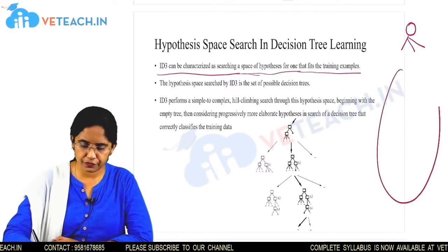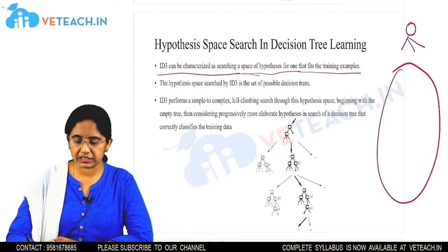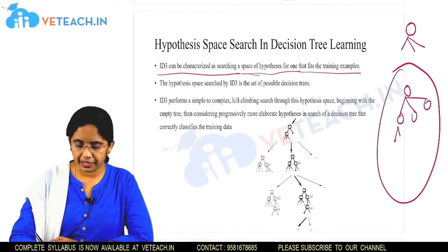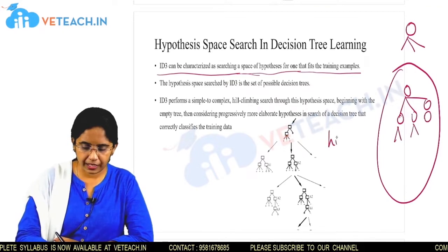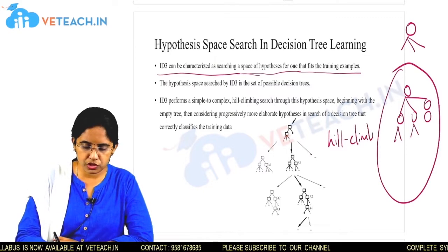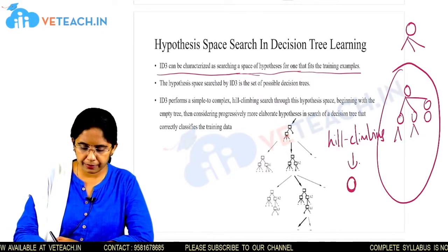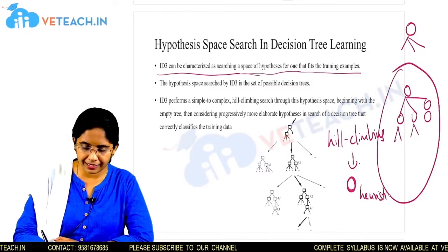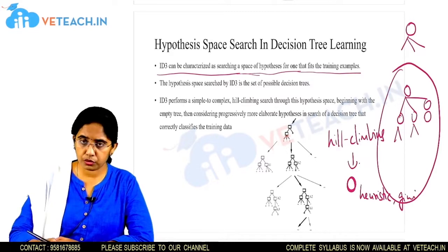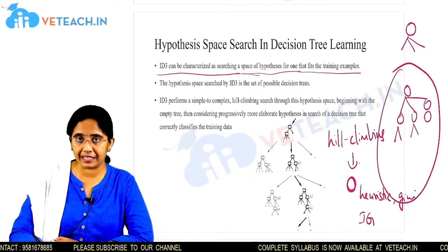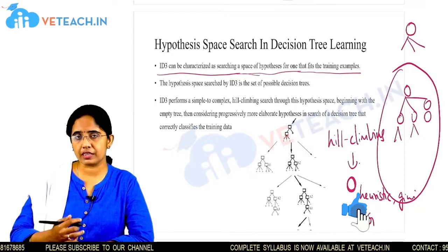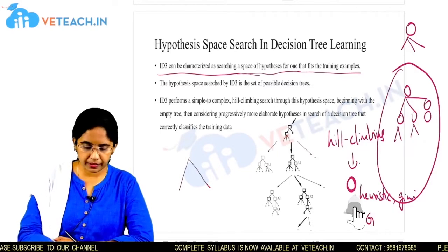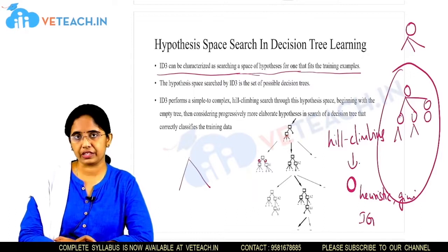Given a hypothesis space, we need to pick the tree which best fits our training data set. For this we use a hill climbing approach. In the hill climbing approach, we start with an empty tree and an empty root. From this empty root we apply heuristics such as calculating information gain and Gini index values. The attribute with the highest information gain is selected as the best split criteria, and we divide the entire data set into parts depending upon the values of that specific attribute.